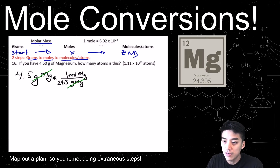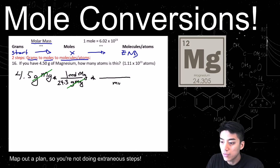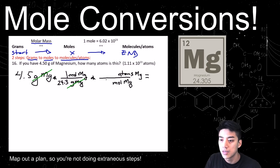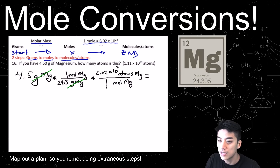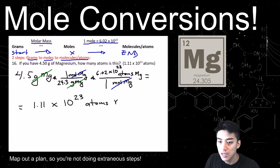The first step is taken care of — grams cross-cancel. Continue on: go from moles to atoms. Put moles on the bottom and atoms on top. Ask yourself: 1 mole has how many atoms? The conversion factor: 1 mole equals 6.02×10²³. Moles cancel out. Now calculate: 4.5 times Avogadro's number divided by 24.3 — make sure you use parentheses. The answer is 1.11×10²³ atoms of magnesium.